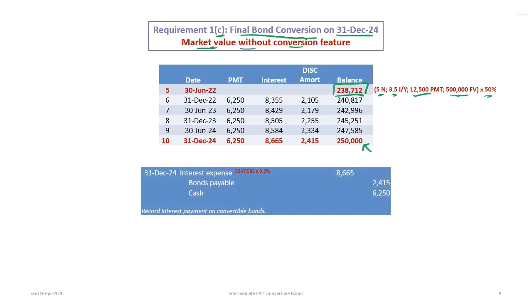First, we update the interest. This journal entry records the interest payment on the convertible bonds just before the conversion. The interest expense is $86.65, the cash paid is $62.50 — which is $12,500 times 50% — and the difference is a credit to bond payable for $24.15. So: debit interest expense $86.65, credit bond payable $24.15, credit cash $62.50. That brings the bonds up to date.